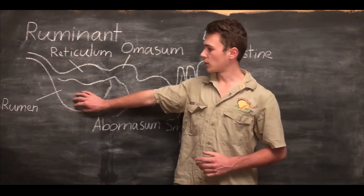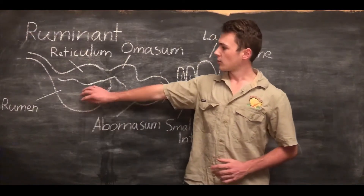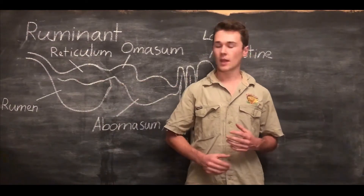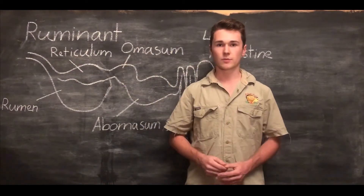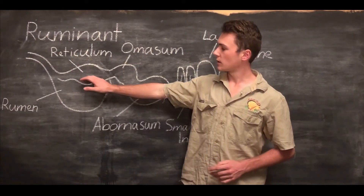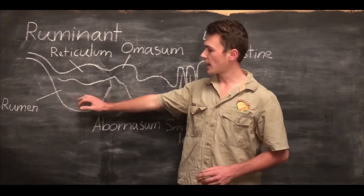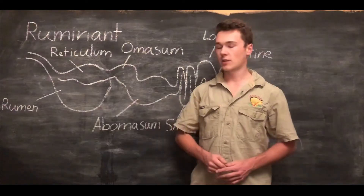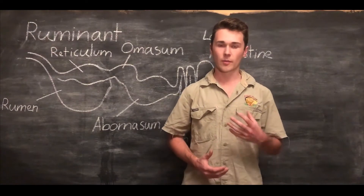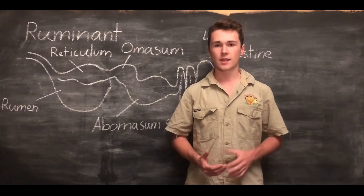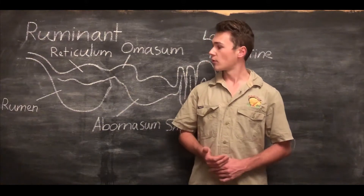Once food is fermented in the rumen and broken down into fundamental units, it moves into the reticulum where it is stored. Ruminant animals can ruminate, which means they take food from the reticulum back up through the oesophagus and chew it again — this is called cud chewing — and then it moves back down into the rumen or reticulum. This helps with chewing and breaking down plant matter, which is really tough and hard to break down — something monogastric animals cannot do.